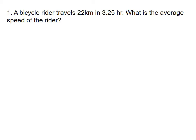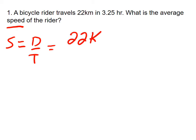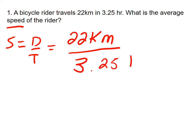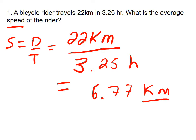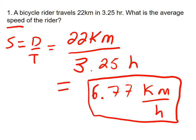Problem 1: A bicycle rider travels 22 kilometers in 3.25 hours. What is the average speed of the rider? Since we're solving for speed, we use the equation: speed equals distance divided by time. The distance is 22 kilometers divided by 3.25 hours. Running that through the calculator gives 6.77 kilometers per hour, which we put in a box.